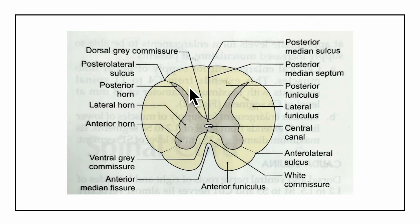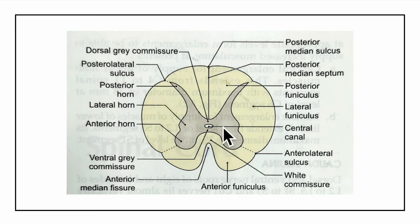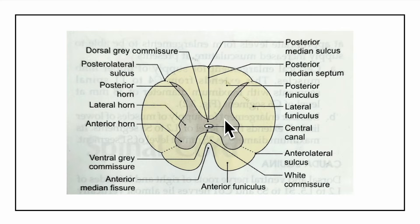Here you can see a wedge-shaped structure constituting the grey matter, with the white matter surrounding it. The white matter — the nerve fibres — lies outside, and the grey matter lies inside. In the centre of the grey matter is the central canal containing the cerebrospinal fluid, lined by a single layer of ependymal cells. The grey matter is in the form of a wedge with a grey commissure joining the grey matter of the right and left halves.